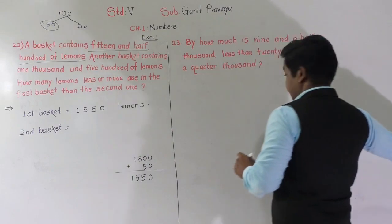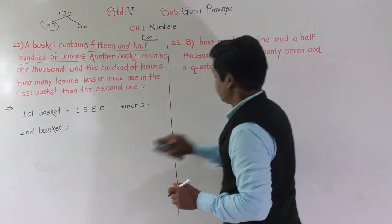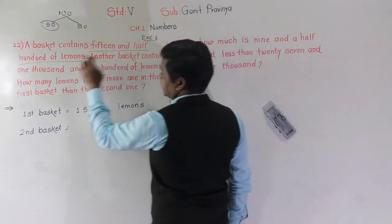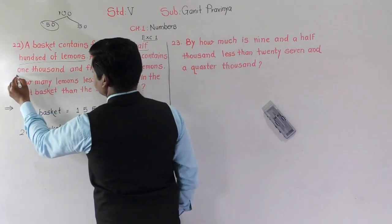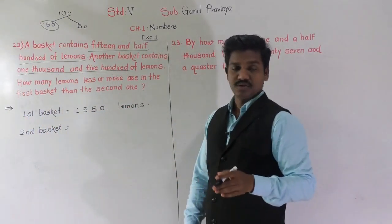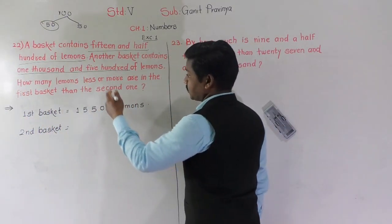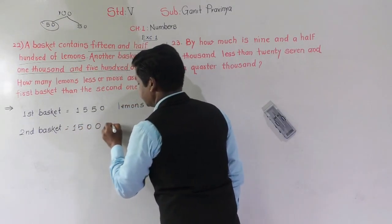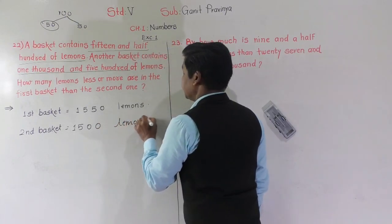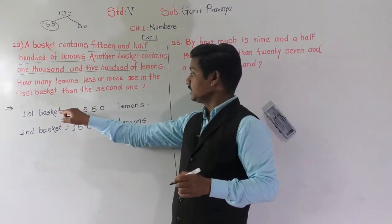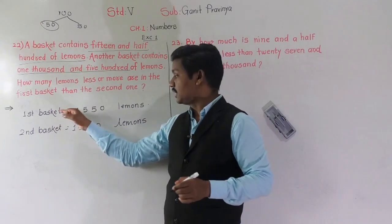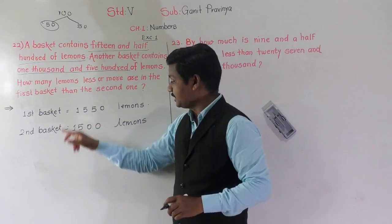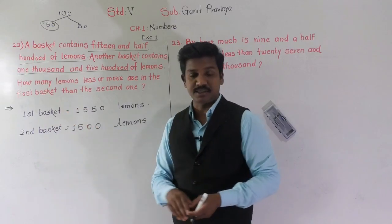In the second basket, another basket contains 1000 and 500 lemons — one thousand and five hundred. So 1500 lemons are in the second basket. Now, in the first basket the lemons are 1550 and in the second basket the lemons are 1500.